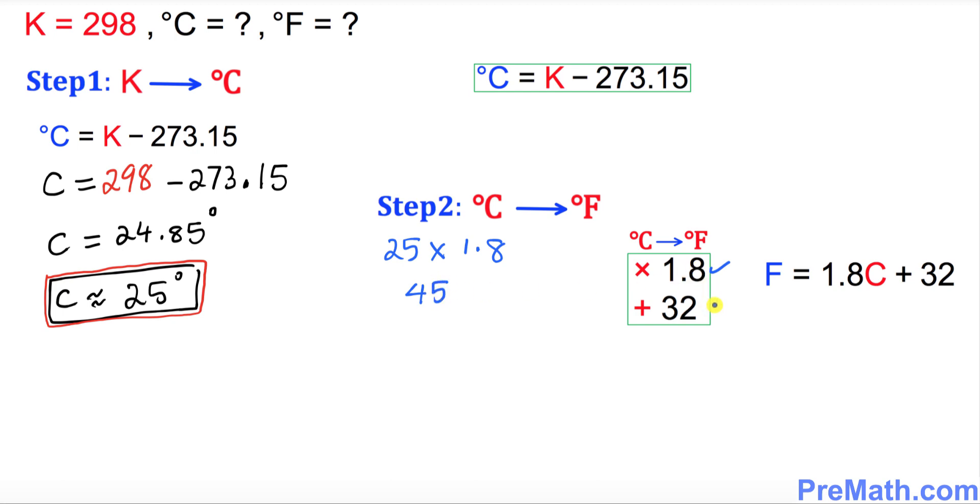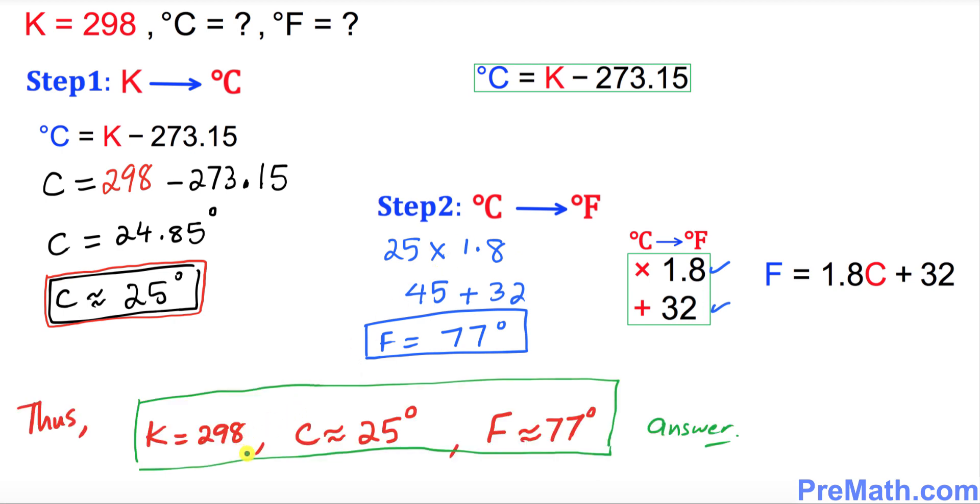The next step is you add 32 into it, and that's going to give you 77 as your F value. Thus our complete answer is right up here: K equals 298, C is approximately equal to 25, and F is approximately equal to 77. That is our answer.